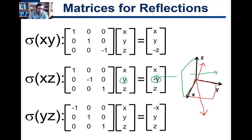So that's going to be one, negative one, and one across the diagonal. Lastly, sigma y, z. That doesn't contain x, so that's going to flip the x. So you have a negative one, one, one. X, y, z went to negative x, y, and z.